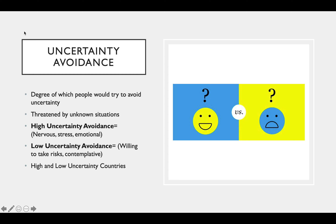The next dimension is uncertainty avoidance — the degree to which people try to avoid uncertainty and threatening unknown situations. High uncertainty avoidance means people don't want to take risks; they feel nervous and emotional and prefer rules and regulations. Low uncertainty avoidance means they're willing to take risks and have a low stress level. Western cultures like the UK, Ireland, Hong Kong, and the US tend toward low uncertainty, while Greece, Portugal, and Japan prefer strong uncertainty avoidance with more rules.